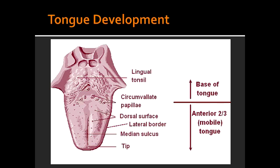What forms the posterior one-third of the tongue? The posterior one-third is formed by the third and fourth arches. What nerve is mainly responsible for taste and sensation in the posterior one-third? Taste and sensation of the posterior one-third is mainly provided by cranial nerve 9, which is the glossopharyngeal nerve.